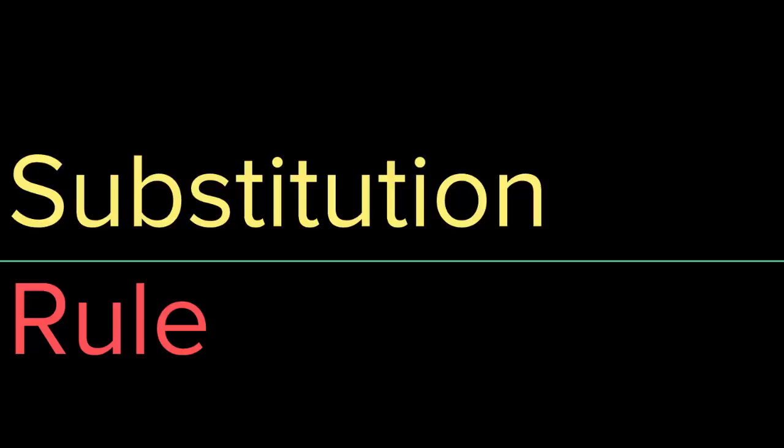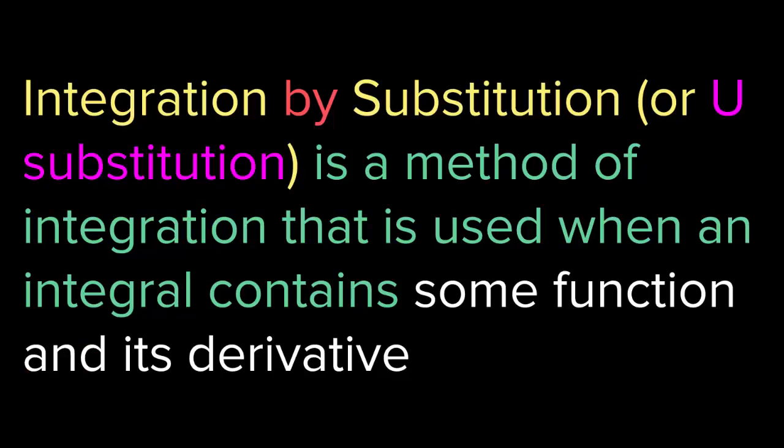Another method for solving integrals is the substitution rule. This is most often called u-substitution because we use the letter u to substitute for a function and find its integral. U-substitution is used when an integral contains some function and its derivative. When a function looks complicated, if you look closely it might include its derivative — and when it does, you use u-substitution.